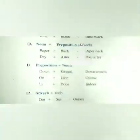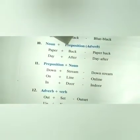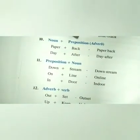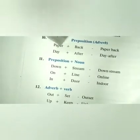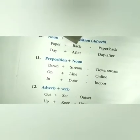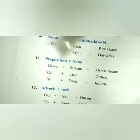Noun plus preposition compound words. Preposition means words like: in, on, under, before, between, among. Examples: 'paper' plus 'back' gives 'paperback'. 'Day' plus 'after' gives 'day after'.